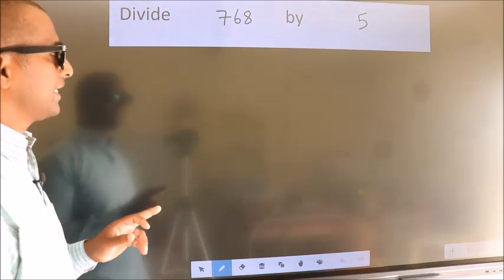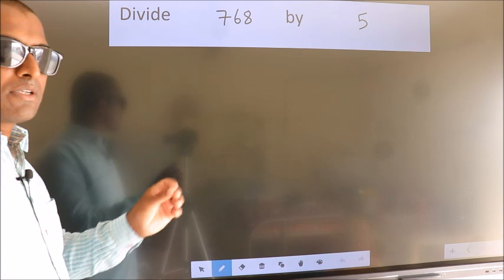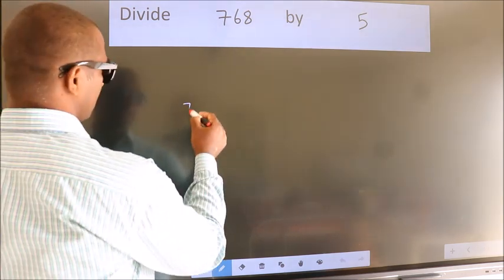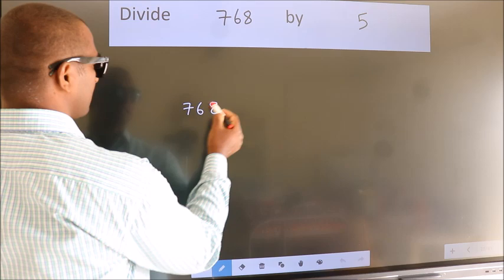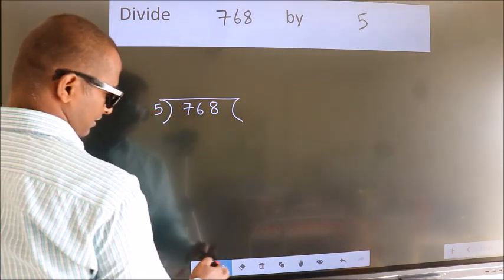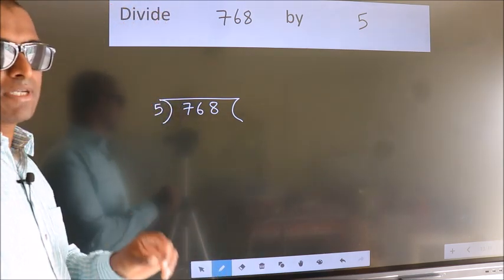Divide 768 by 5. To do this division, we should frame it in this way: 768 here, 5 here. This is your step 1.